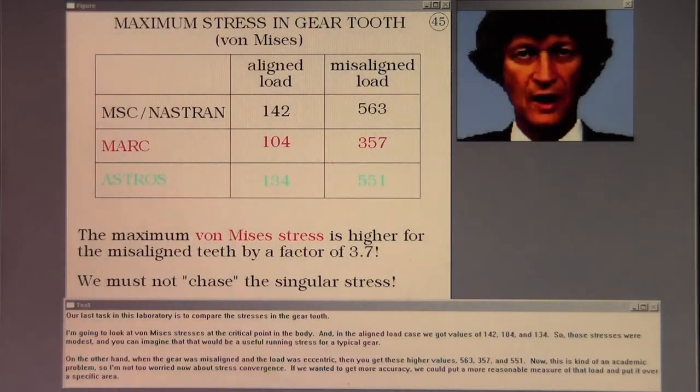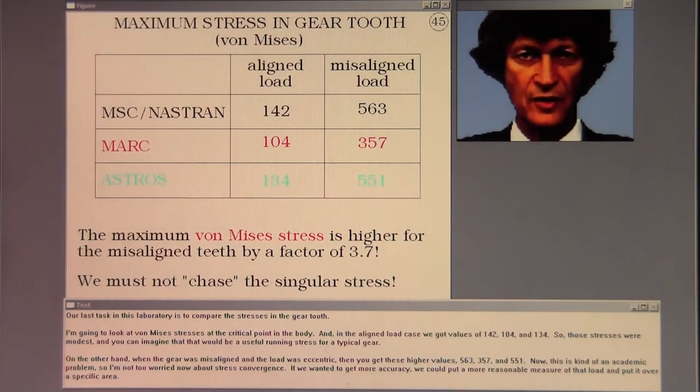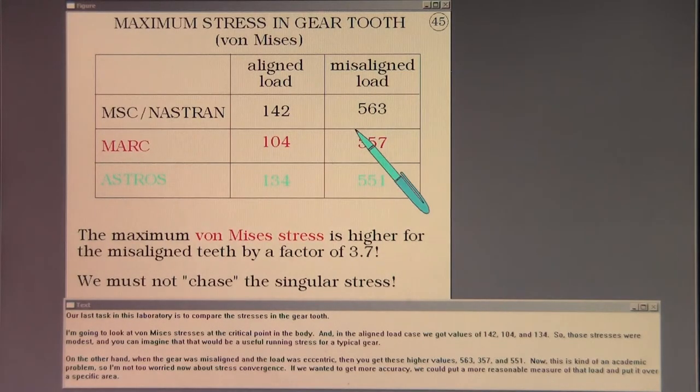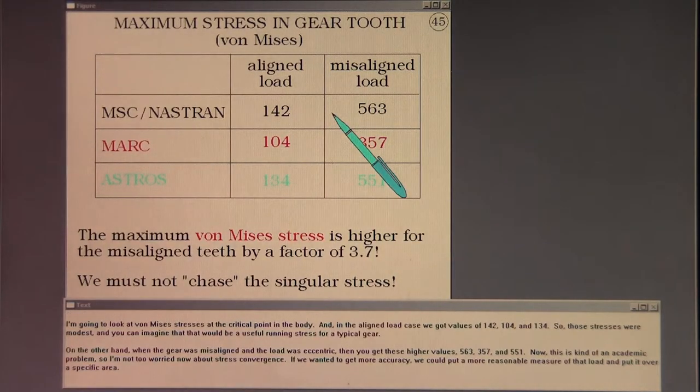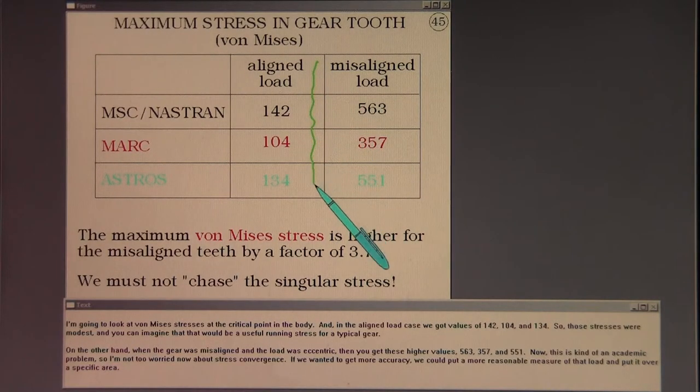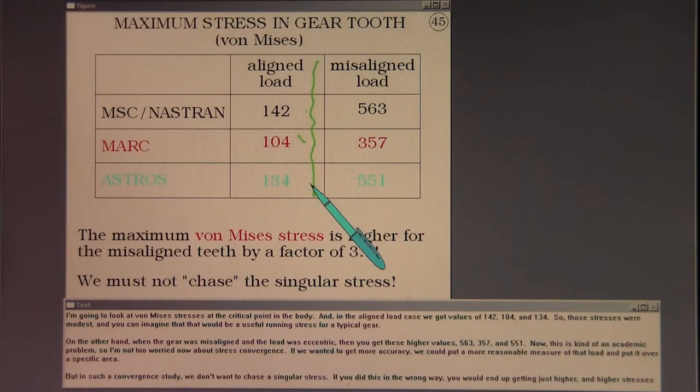Our last task in this laboratory is to compare the stresses in the gear tooth. I'm going to look at Von Mises stresses at the critical point in the body. And in the aligned load case, we got values of 142, 104, and 134. So those stresses were modest and you can imagine that that would be a useful running stress for a typical gear.